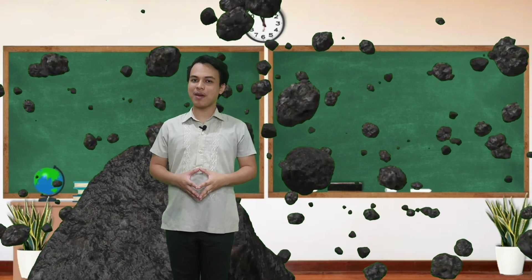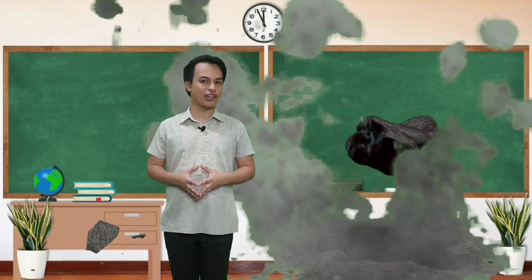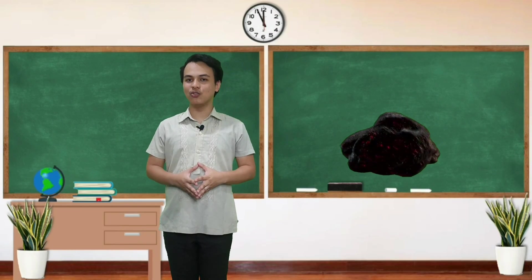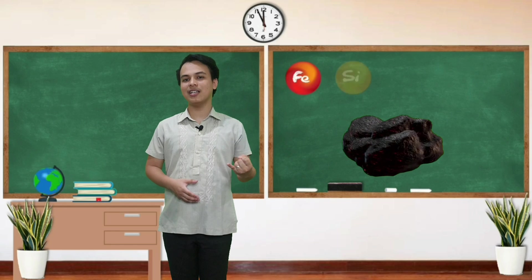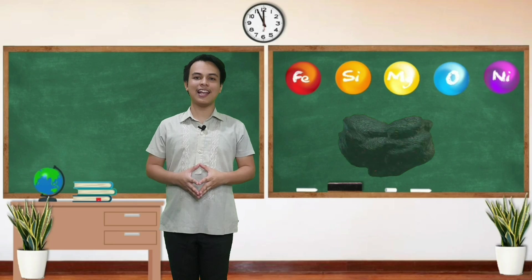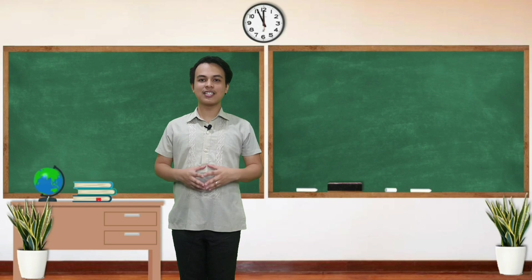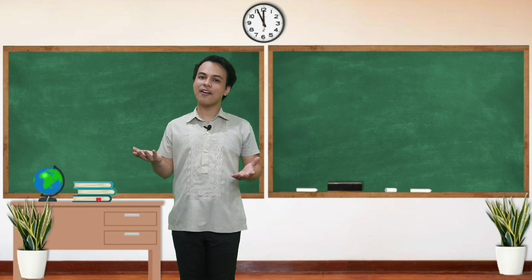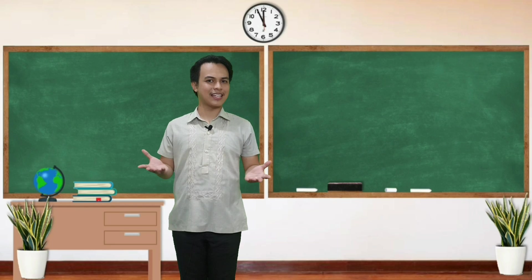Pangatlo, sa pag-aanalisa ng mga eksperto sa mga meteorites, napag-alama nila na ito ay naglalaman ng chondrite. Ang chondrite ay binubuo ng mga elements na iron, silicon, magnesium, oxygen, at ang iba ay mayroong nickel. Ang Earth at ang mga meteorites ay may halos parehong densities. Thus, the Earth's mantle rock and the meteorites minus its iron have the same densities. Does it make sense?